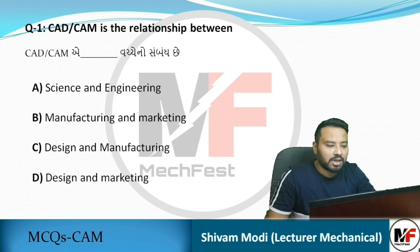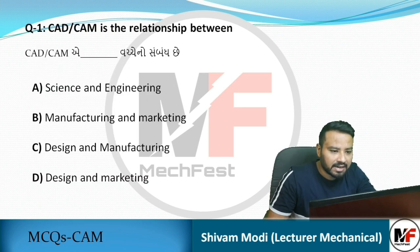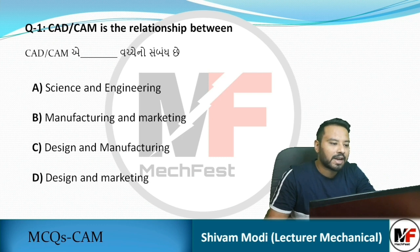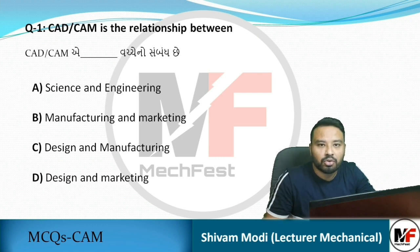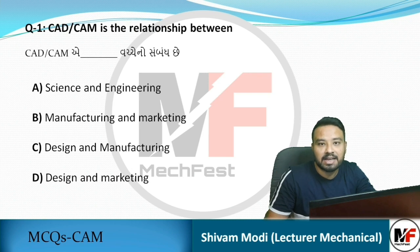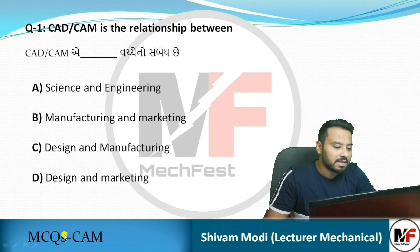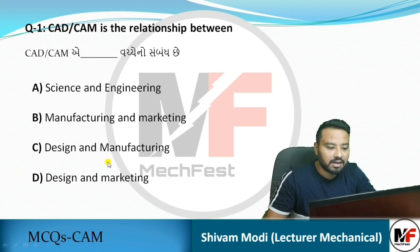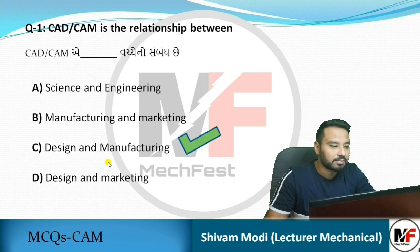The first MCQ: CAD CAM is the relationship between what? CAD CAM means Computer Aided Design and Computer Aided Manufacturing. So obviously the answer is C – Design and Manufacturing related.